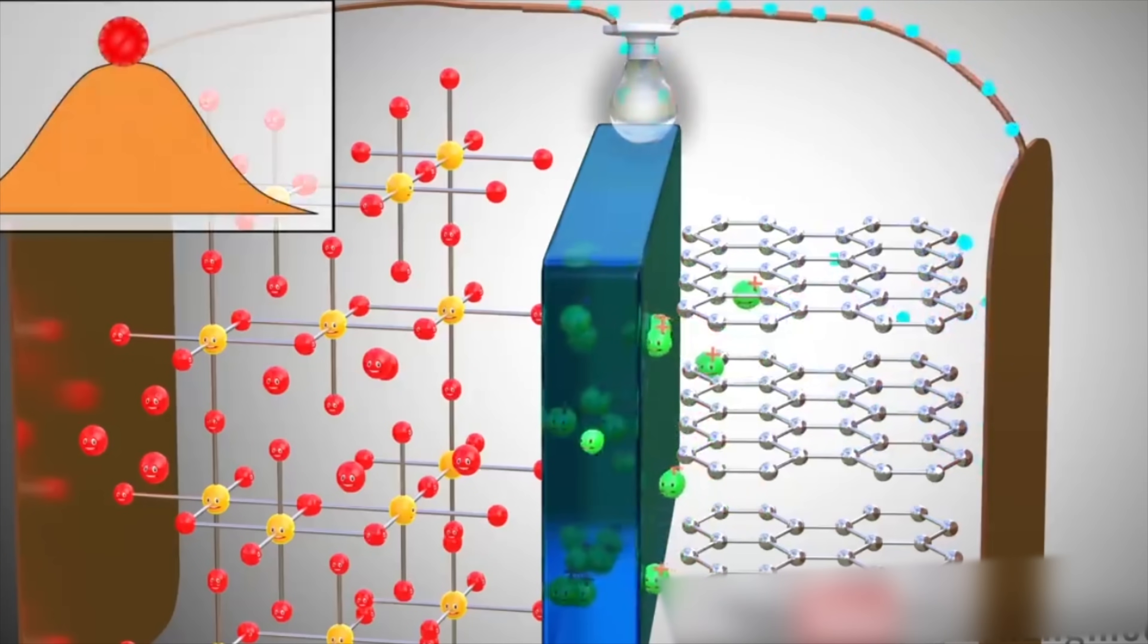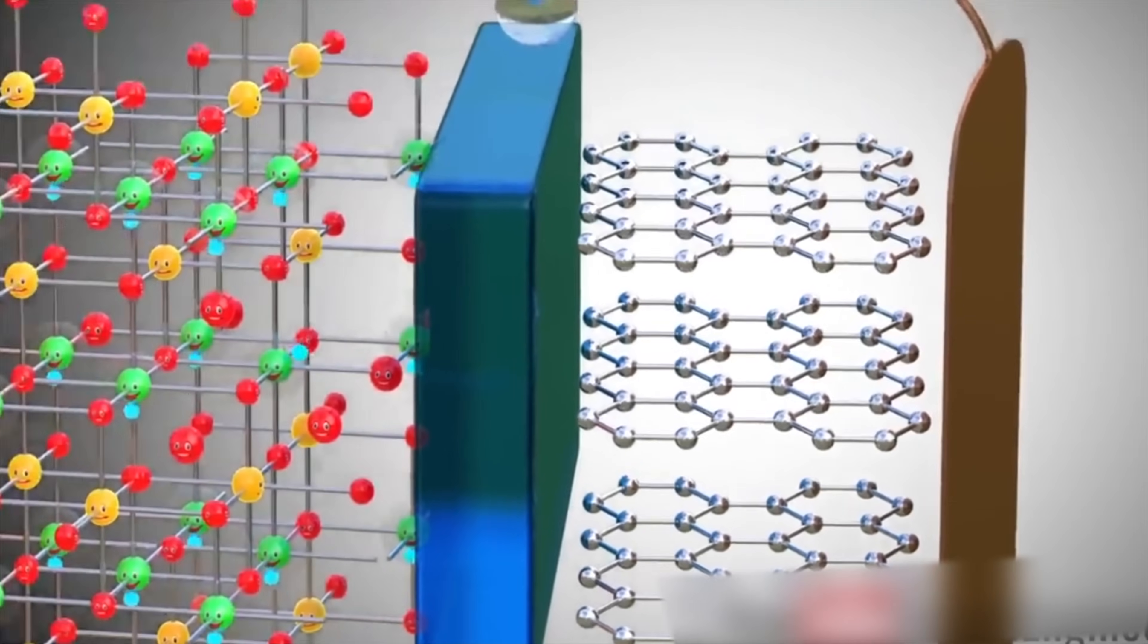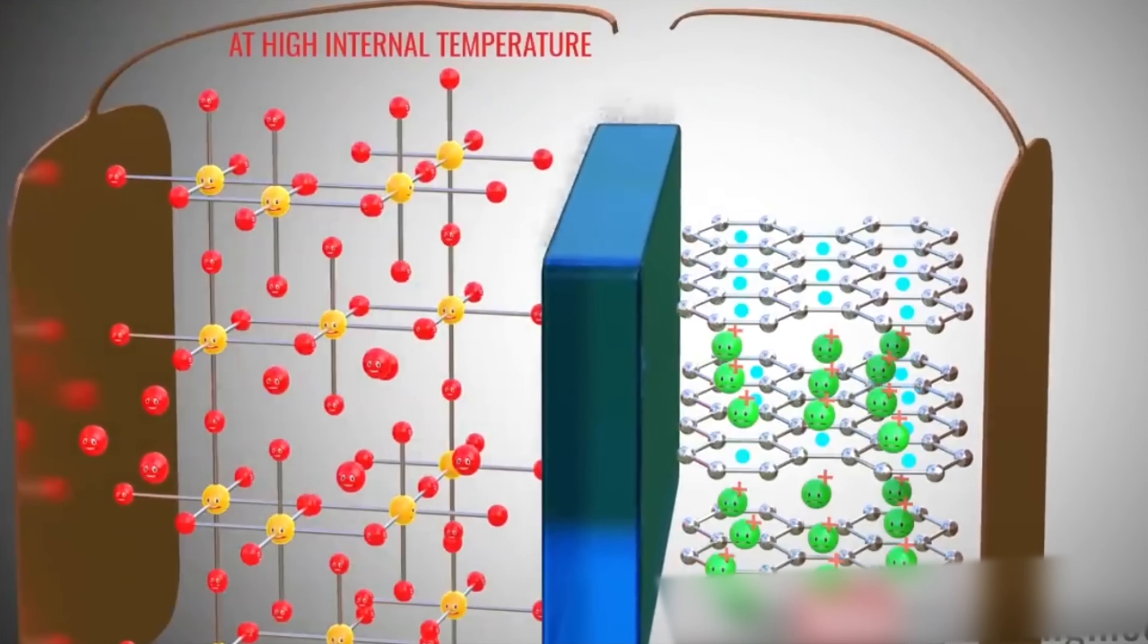The anode, which is the negative electrode where electricity flows into the battery, is made of lithium metal, which is one of the most abundant and lightest elements on Earth.